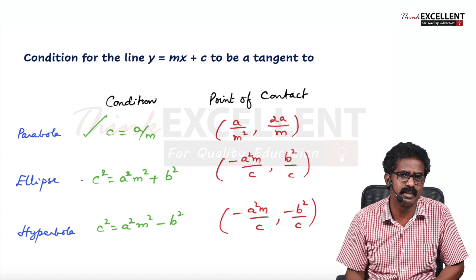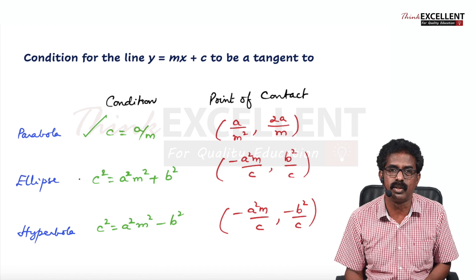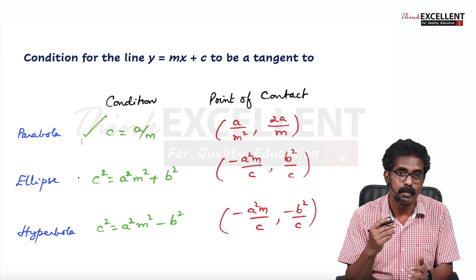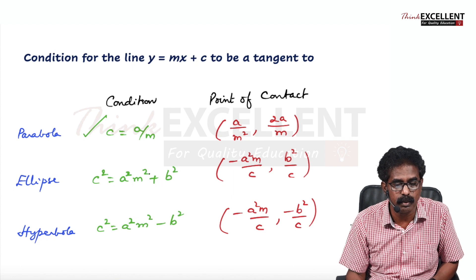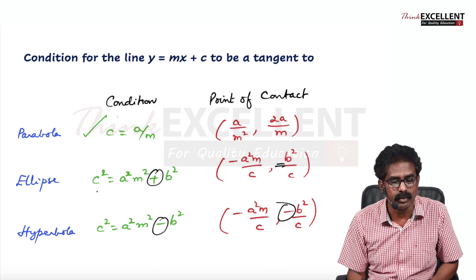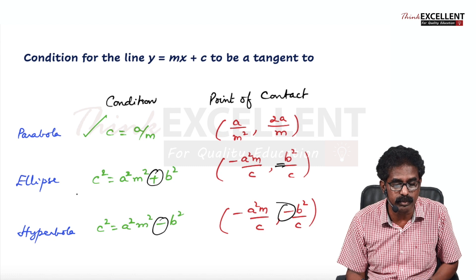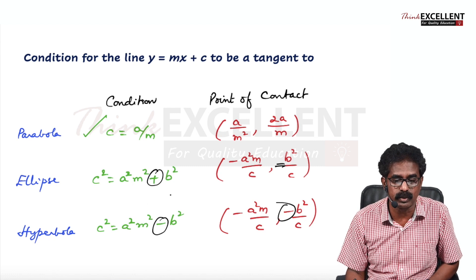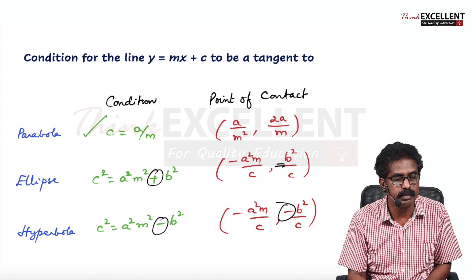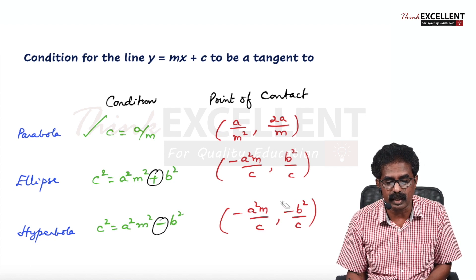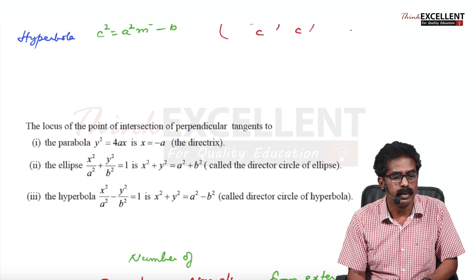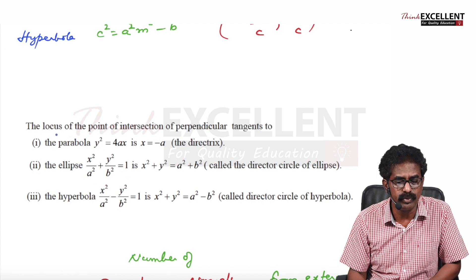Condition for the line y = mx + c to be a tangent: for parabola, c = a/m, and point of contact is (a/m², a/m). For ellipse and hyperbola, the formulas are almost the same — only the sign differs. For ellipse, c² = a²m² + b²; for hyperbola, c² = a²m² - b². Point of contact for ellipse is (-a²m/c, b²/c); for hyperbola, both values are negative.